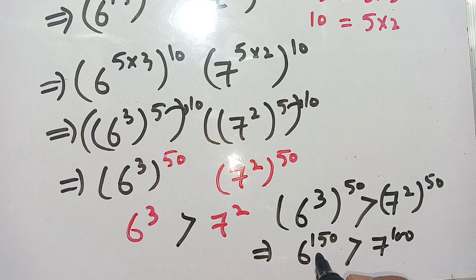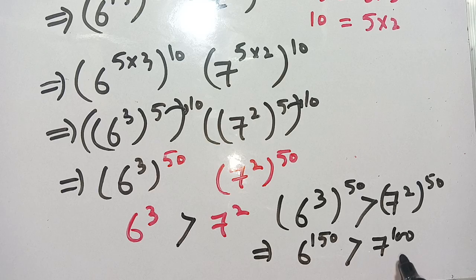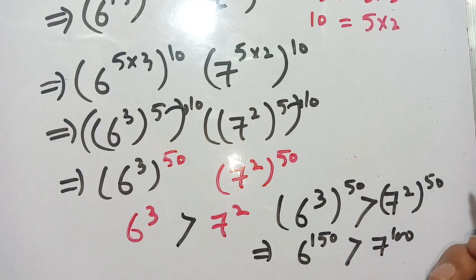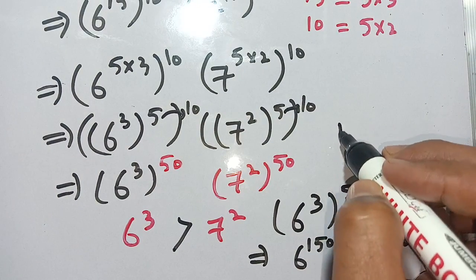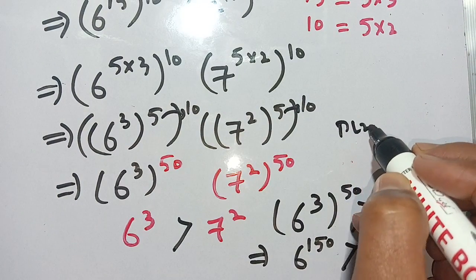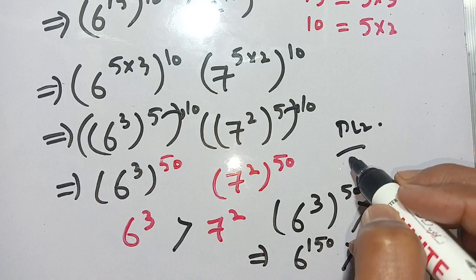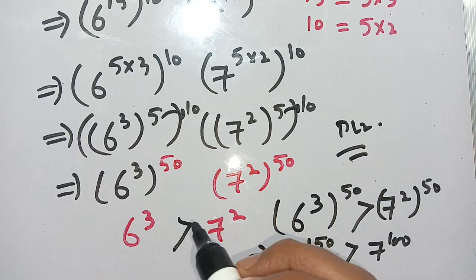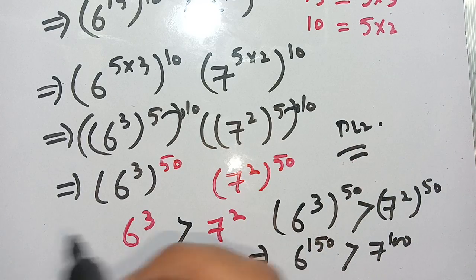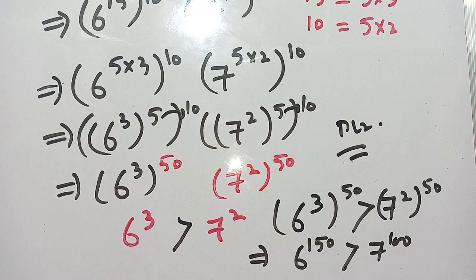Thus, 6 raised to the power 150 is greater than 7 raised to the power 100. If you are new here, make sure to subscribe to the channel for more informative videos. See you in the next video!